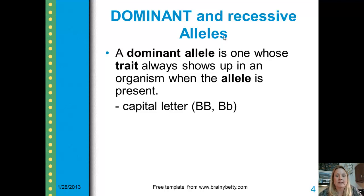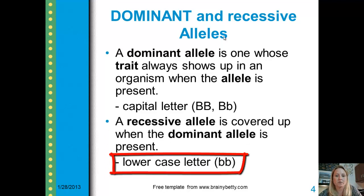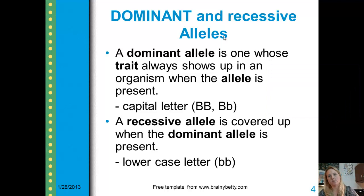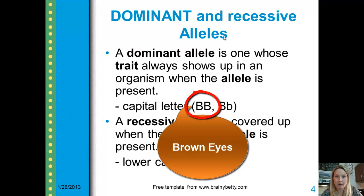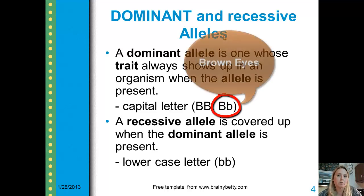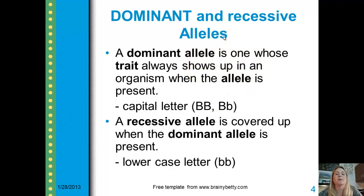For example, here are our recessive alleles, again represented by lowercase letters. Let's say that brown eyes are dominant to blue eyes. We would represent the brown-eyed allele with a capital B, and we would represent the blue-eyed allele with a lowercase b. So if you receive two dominant alleles, or two capital Bs, you will have brown eyes — that will be your trait. If you receive a capital B and a lowercase b, meaning you have a brown-eyed allele and a blue-eyed allele, your eye color will still be brown. You will carry the blue-eyed trait, but it will not show through or be expressed.